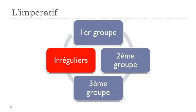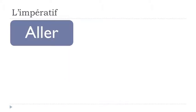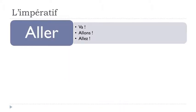Of course, as usual in French, we've got some irregular verbs. For 'aller,' the final S goes away in the tu form: 'Va!', 'Allons!', 'Allez!' The other forms are exactly the same as the present.